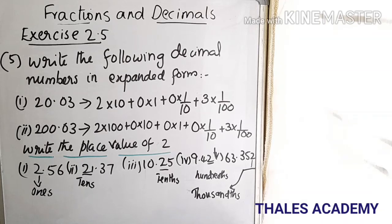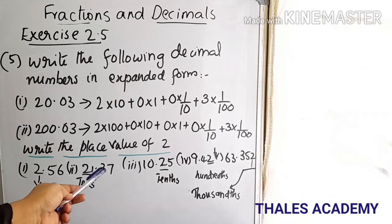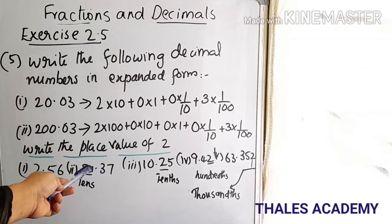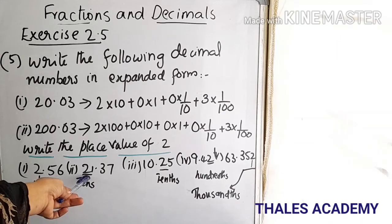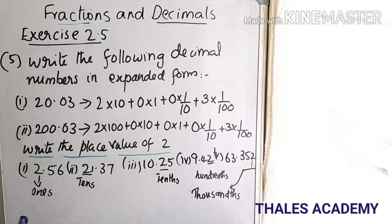Write the place value of 2 in the given numbers. In 2.56, the place value of 2 is in the ones position. In 21.37, the place value of 2 is in the tens position.